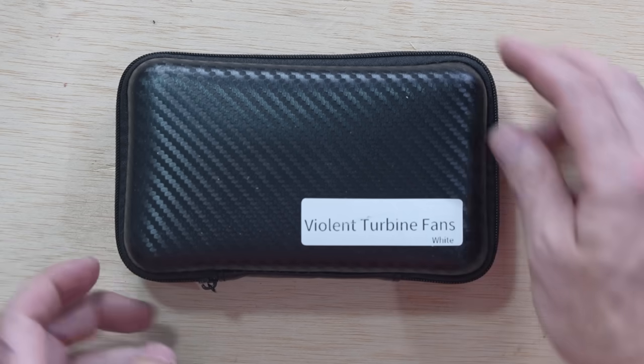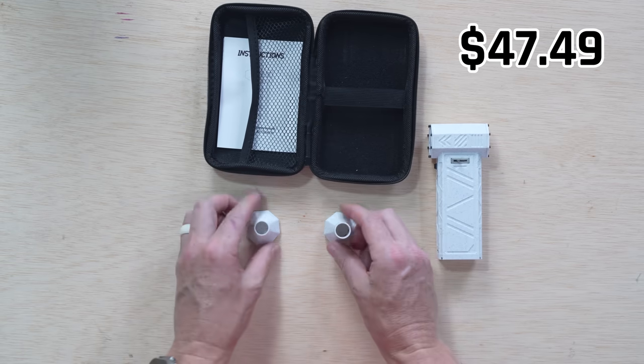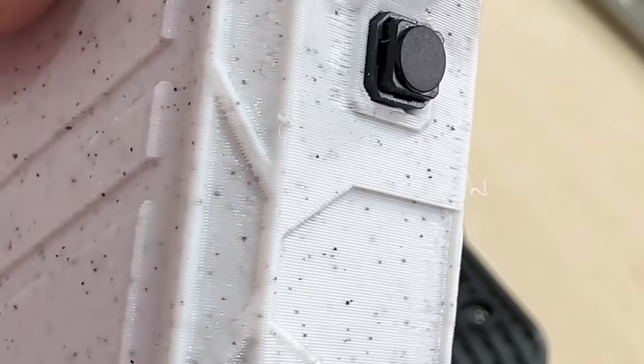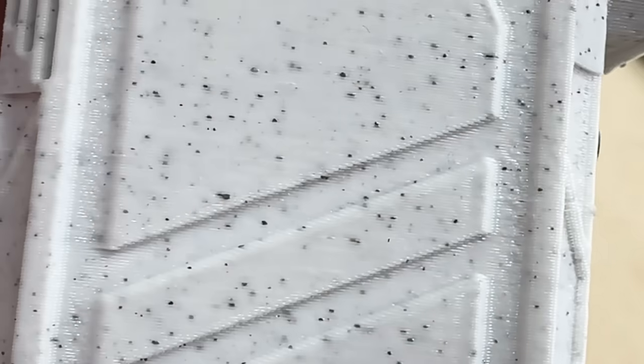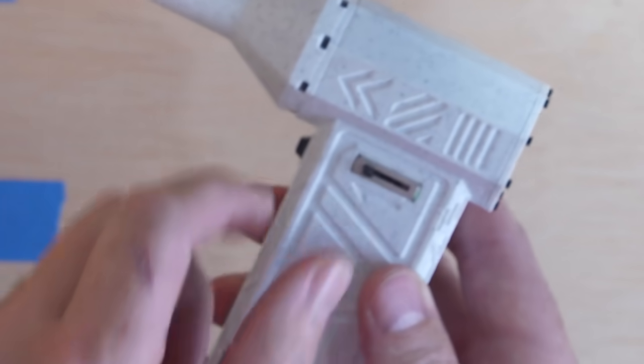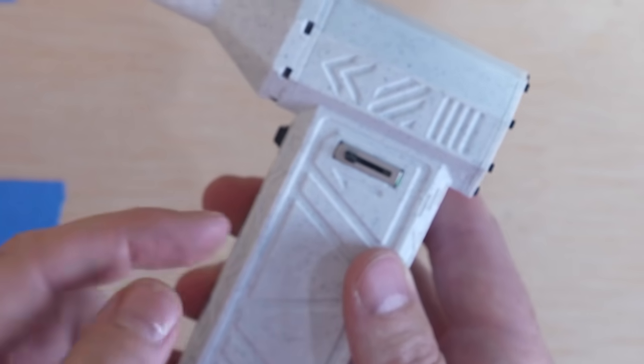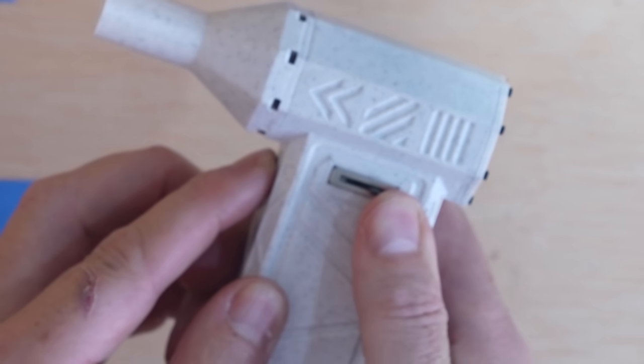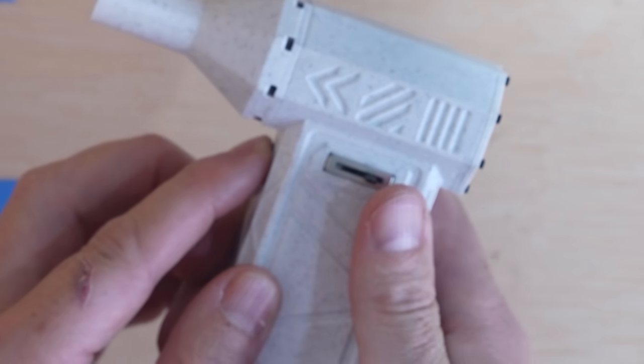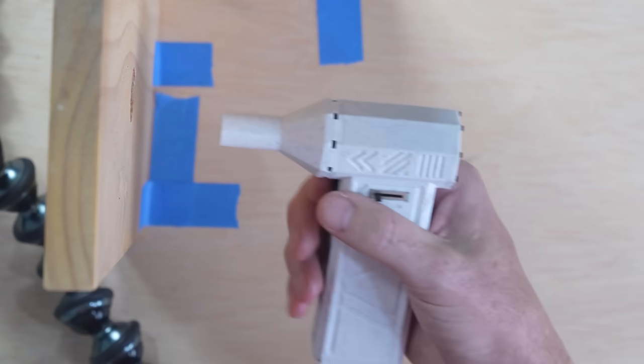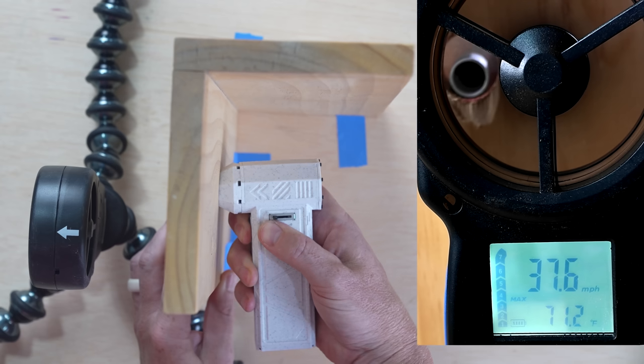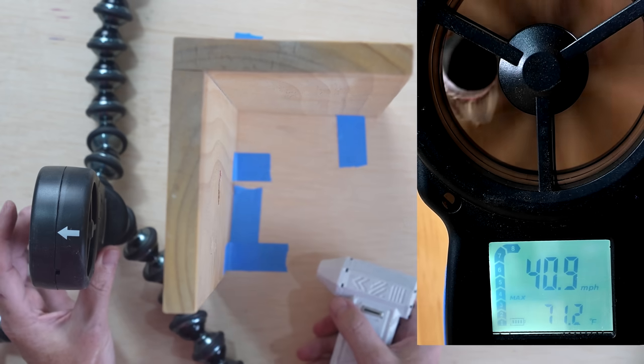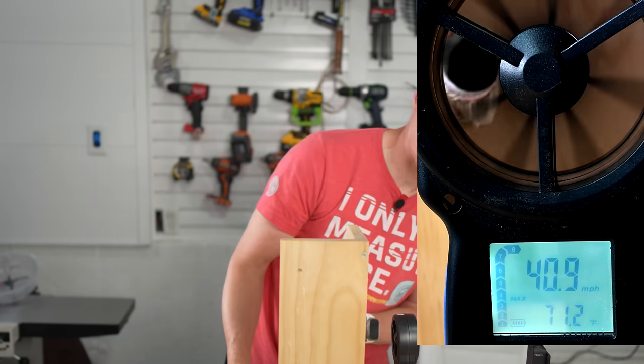Last but not least coming in at a whopping forty seven dollars and forty nine cents we have the violent turbo fan electric air duster. So this is the only one that I got that appears to be completely 3D printed. This one does have a slider here for going from highest to lowest but one thing I noticed is when you put it in the lowest setting it doesn't actually turn on and you have to move it a fair amount before it clicks on. Let's put this up at the full speed and see what it can do. Okay we have a speed record here, 40.9 miles per hour.